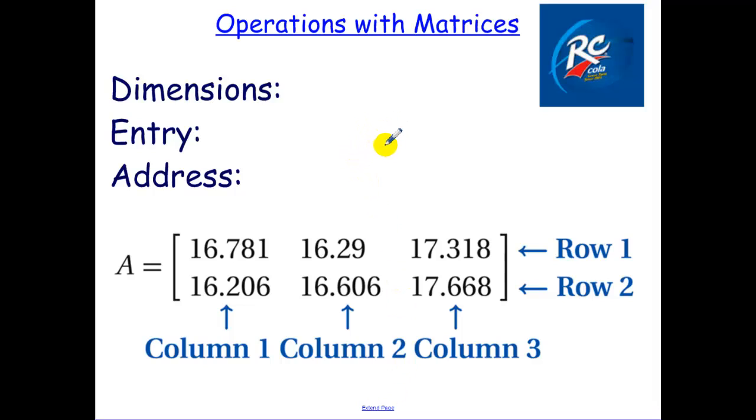The dimensions of a matrix, say this is matrix A, we use a capital letter. We first give the number of rows. The rows are like rows in an Excel spreadsheet, so there's two rows by three columns. And I have a little reminder here of RC Cola. You first do rows, then you do columns.